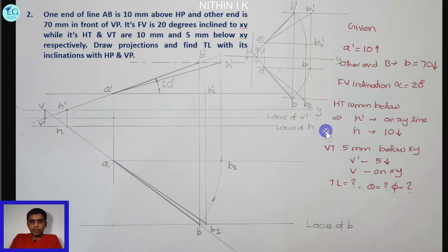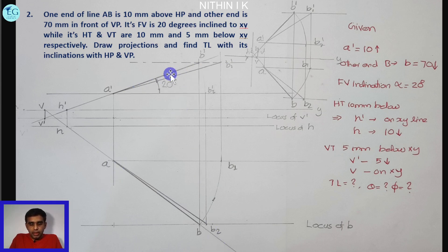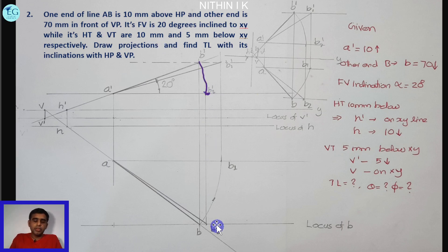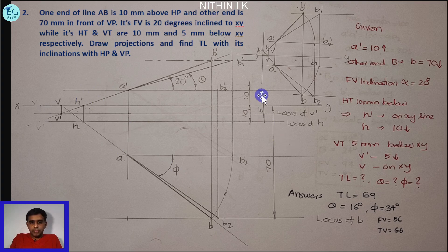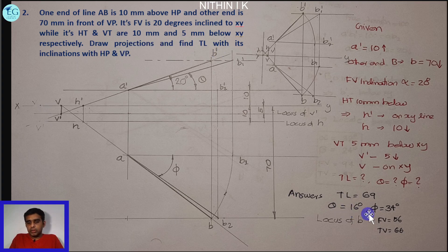Rotating to B1 gives B1-dash; A-dash B1-dash gives the true length and inclination with VP. Rotating to B2 gives the inclination with HP. Dimensions are now complete. The true length and true inclination theta are the final answers.